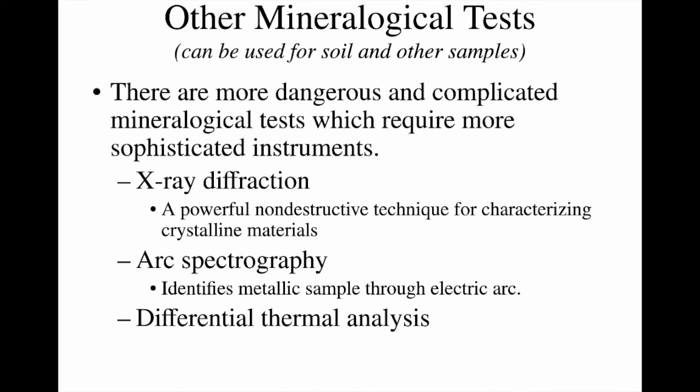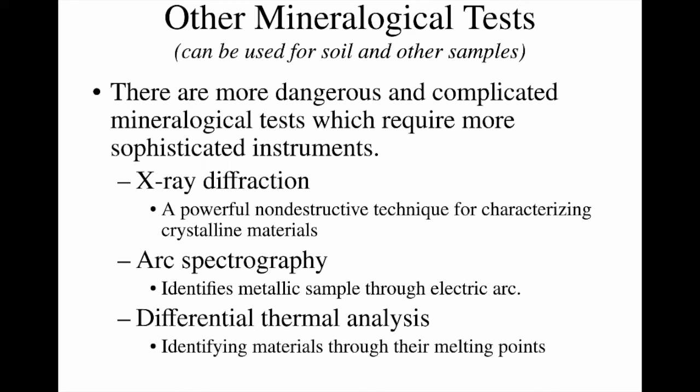Finally, we have differential thermal analysis. This is one of the more commonly used tests in forensic geology; however, it's not something we can do here at school because of the potential danger. The idea behind this test is that we can identify materials based on their melting points. To melt minerals, soil, rock samples, or metal samples requires extremely high temperatures, which we are not set up for here at school. But crime labs have machines that allow this to be done safely, and it can be a really effective way to match a sample from a suspect to a crime scene — because if two samples are made of the identical same material, they will melt at the exact same melting point.